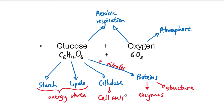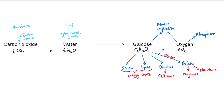So those are the five uses of glucose. That covers the whole chemical reaction of photosynthesis — where the plant gets the two reactants and how they are transferred to the leaves, and also the uses of the products.